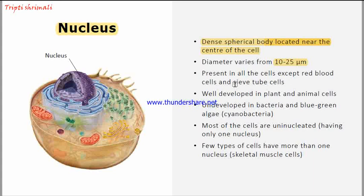The nucleus is well developed in plants and animal cells. If we talk about eukaryotic cells, the nucleus is very well developed in these eukaryotic cells like plants and animal cells. But in prokaryotic cells like bacteria and blue-green algae, which are also known as cyanobacteria, the nucleus is not well developed — we can say it is underdeveloped in prokaryotic cells.